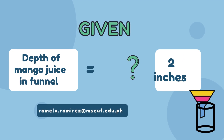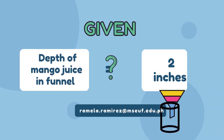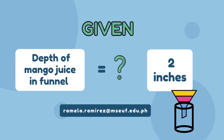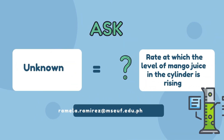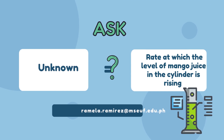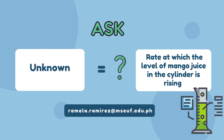Additionally, the depth of the liquid in the panel is 2 inches, according to the problem. The unknown variable — what is being asked — is the rate at which the level of liquid in the cylinder is rising.